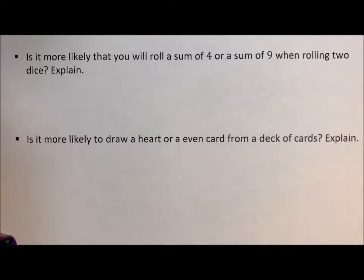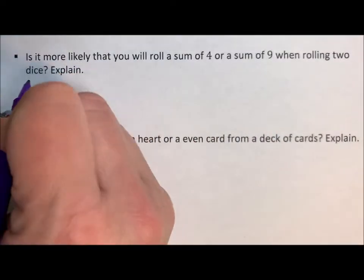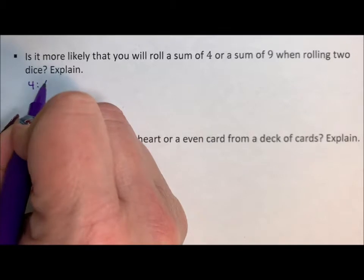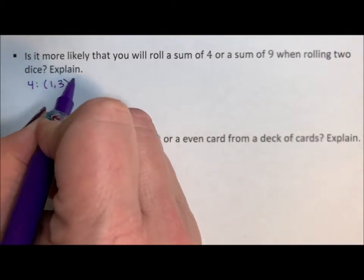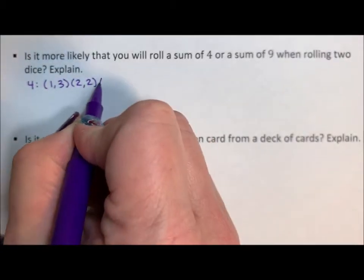Whenever you're talking about rolling dice or doing any kind of probability, it's good to just figure it out. So if I'm rolling two dice, I'm just going to write it out. To roll a four, that's going to be one and three, two and two, or three and one.